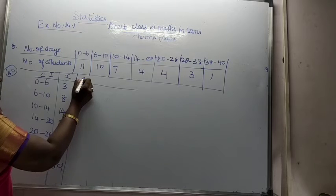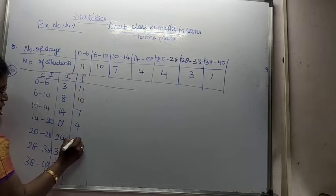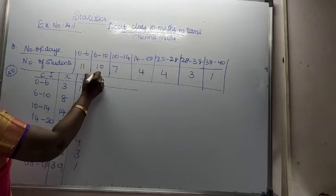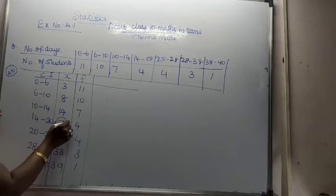Next one, the frequencies F will be: 11, 10, 7, 4, 4, 3, 1. Now, we are going to assume A equals 17.